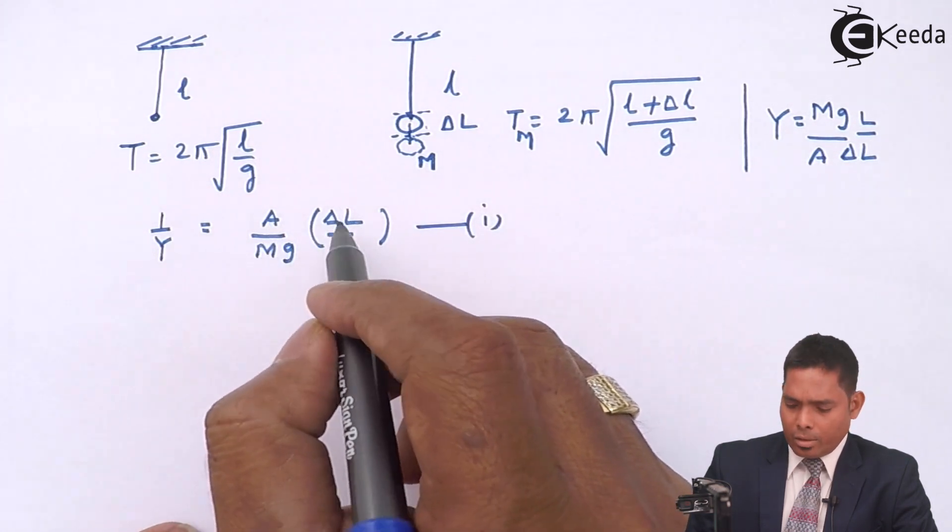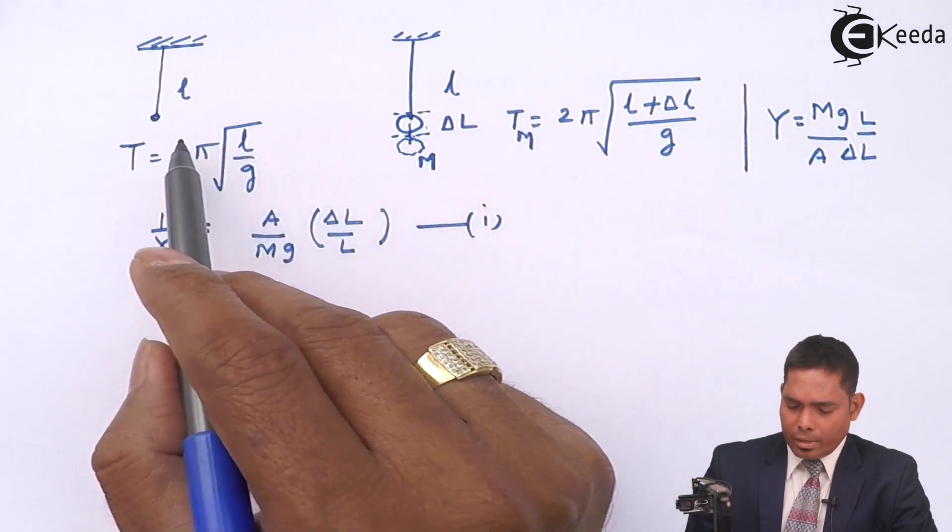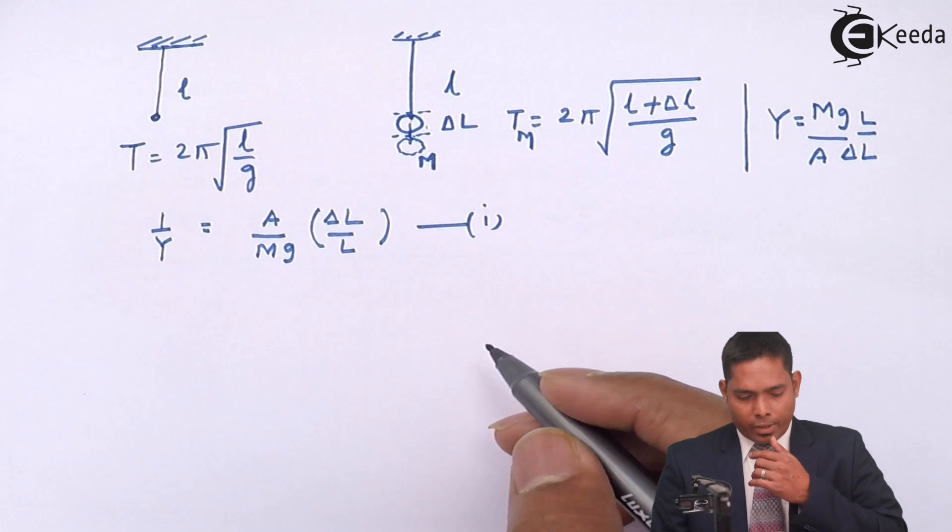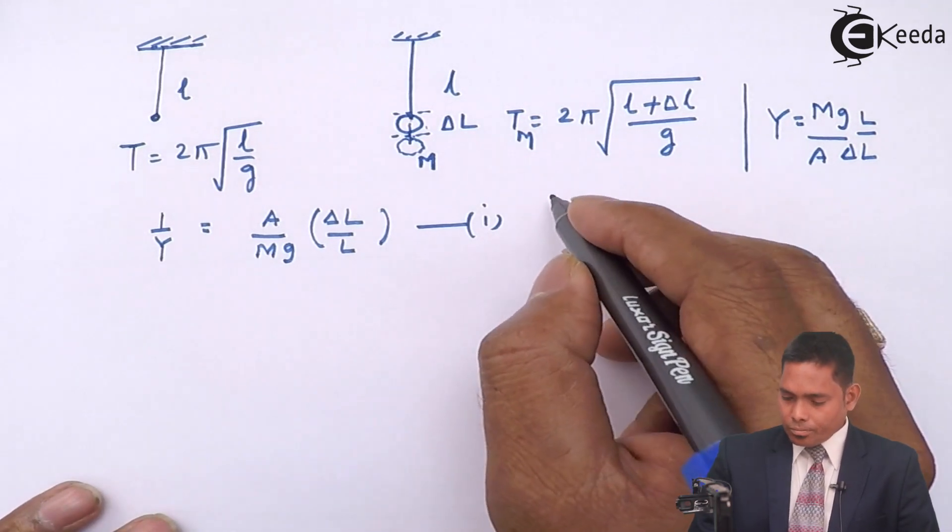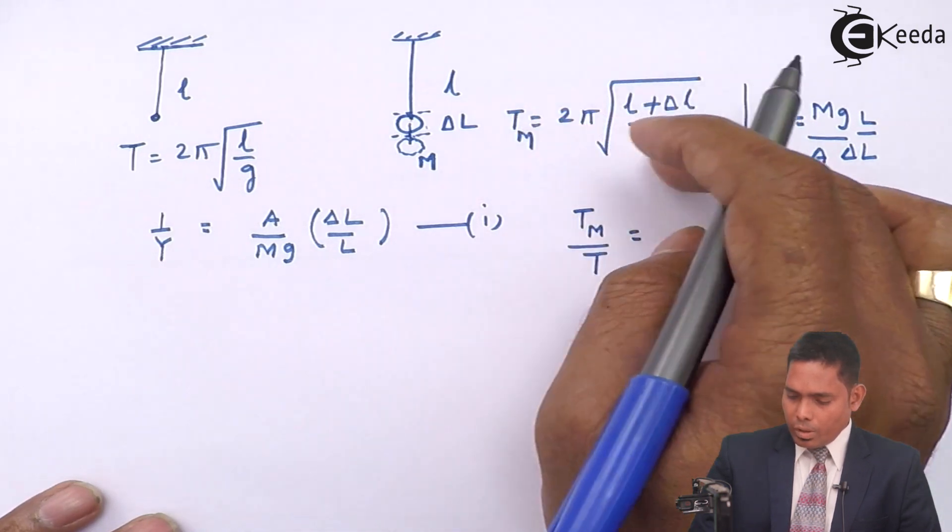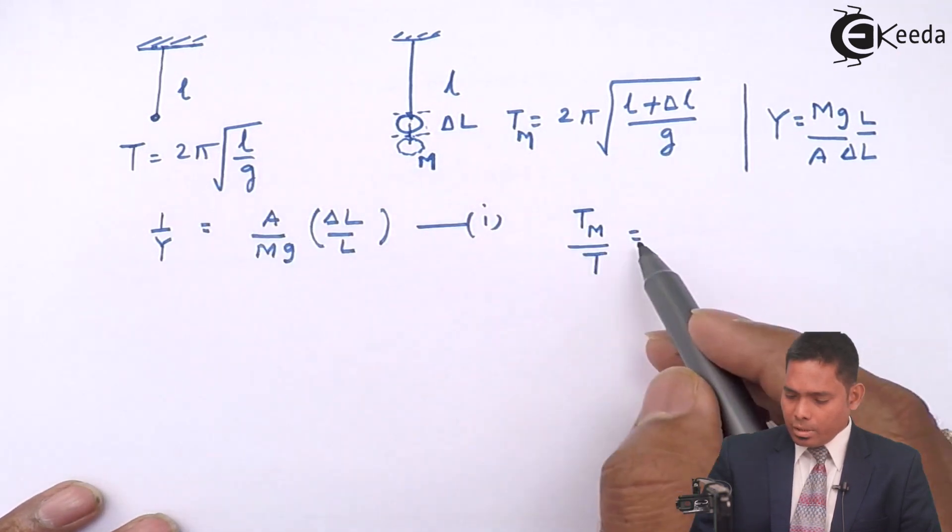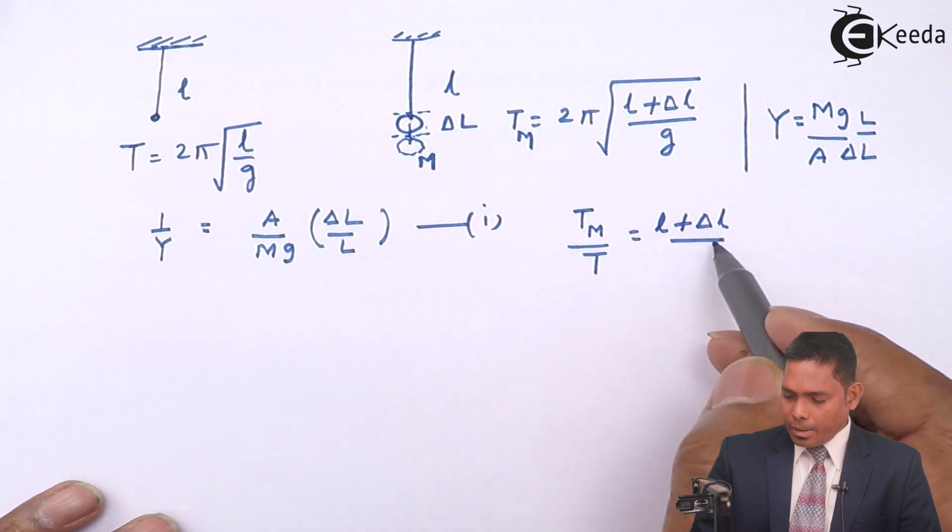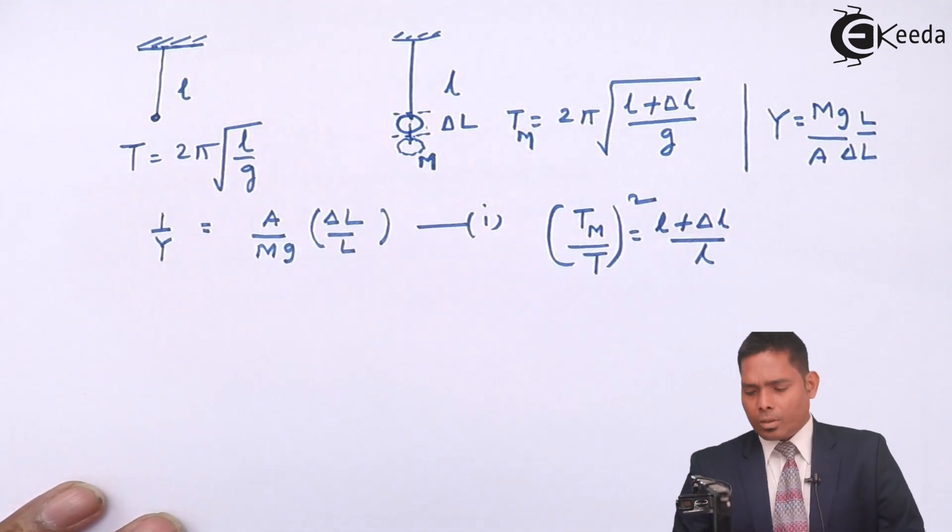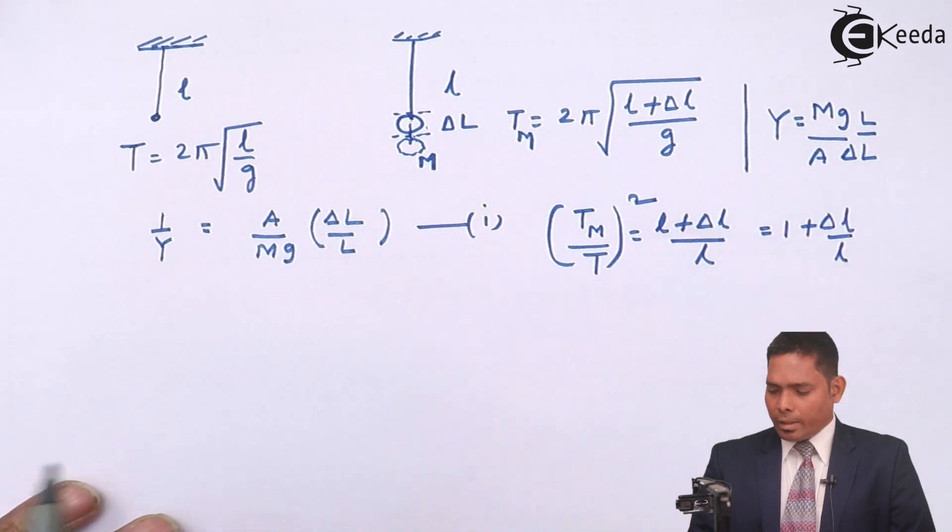Suppose this is equation number one. I have to just substitute this delta L by L in terms of Tm and T. So to do that, this time period of oscillation and this has to be divided. If I divide that, I will get Tm over T equals to this value divided by this value. 2 pi 2 pi will cancel. G G will cancel. So it will be L plus delta L by L under root. So if I take a square both sides, this becomes 1 plus delta L over L.